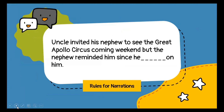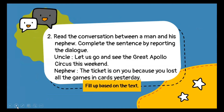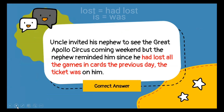Referring to the first conversation that took place, you can see the dialogue between the uncle and the nephew. The correct answer would be: since he had lost all the games and cards the previous day, the ticket was on him.